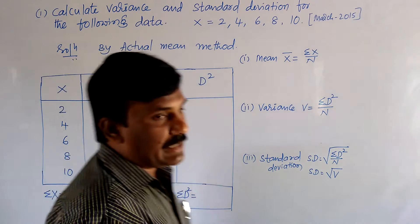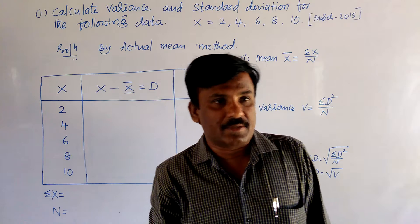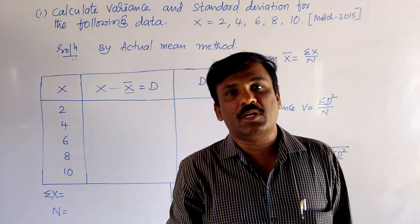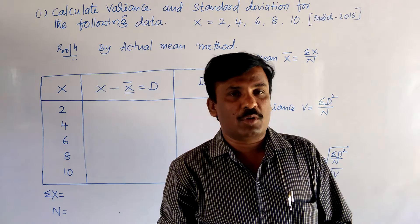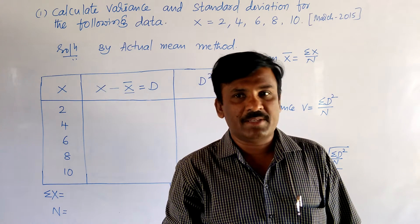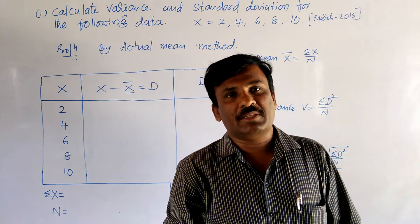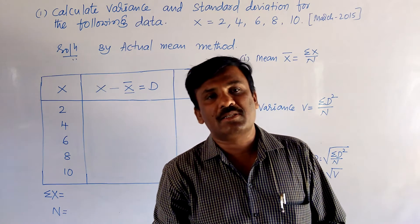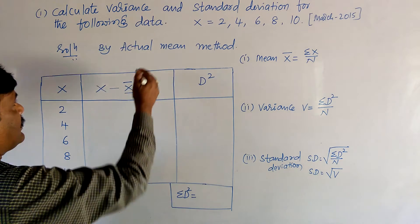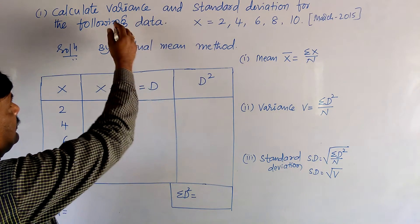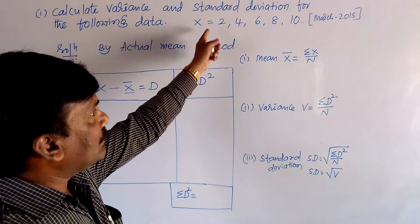To calculate the standard deviation or variance of either grouped data or ungrouped data, this can be done by four methods: direct method, actual mean method, assumed mean method, and step deviation method. Today we are discussing about the actual mean method to calculate the variance and standard deviation of the ungrouped data.